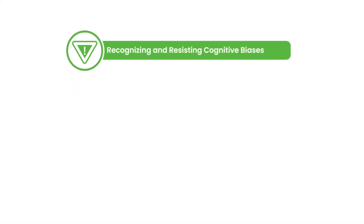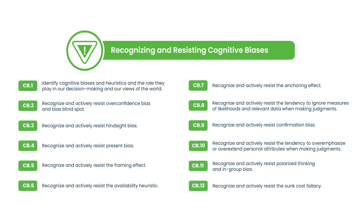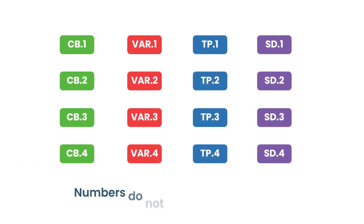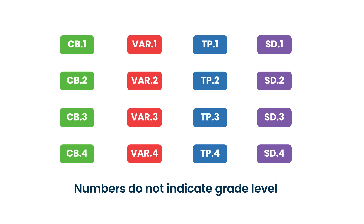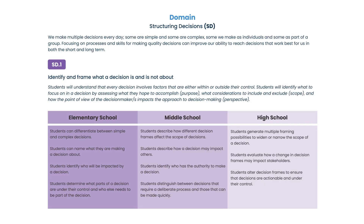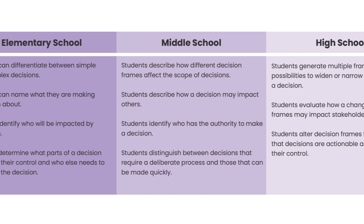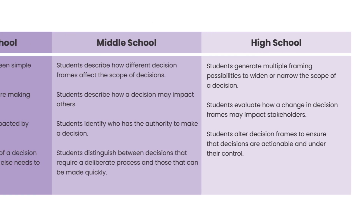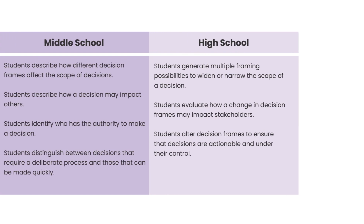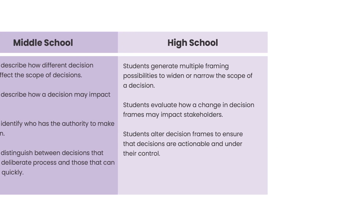Each domain contains a unique set of learning standards that are identified by the initials related to the domain and a number. The same number is used for the standard regardless of whether you are looking at elementary, middle, or high school grade bands. Every standard includes a learning progression that breaks down how the learning evolves from elementary to middle to high school. These progressions are written to include only what is new at each grade band, but we encourage you to check out the other grade bands to identify learning objectives that may also be relevant for your students.